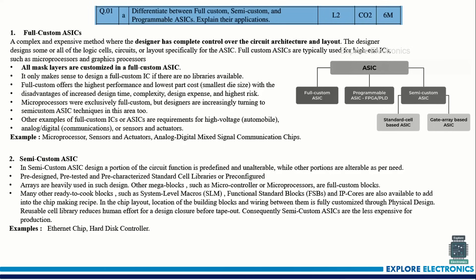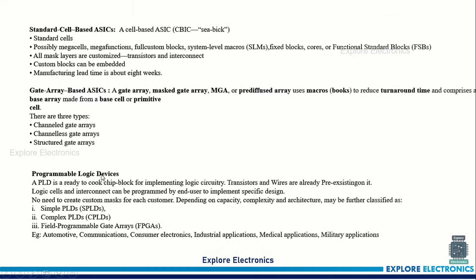The very first question is: differentiate between full custom, semi-custom, and programmable ASICs and explain their applications. There are two parts — applications carries two marks. In ASICs there are three types: full custom, programmable, and semi-custom. In semi-custom, standard cell based and gate array based ASICs are there. You need to explain each with at least five points and two to three applications. For programmable logic devices, give examples like automotive, consumer electronics, industrial, military, and aerospace applications where FPGAs are used.